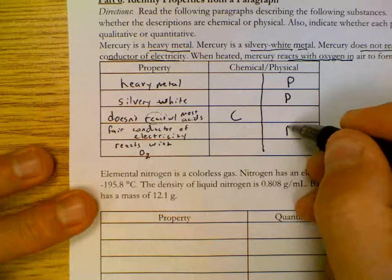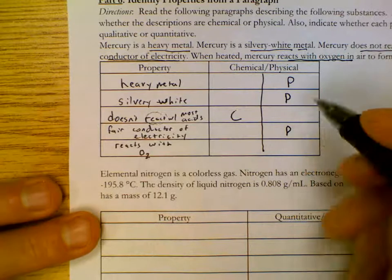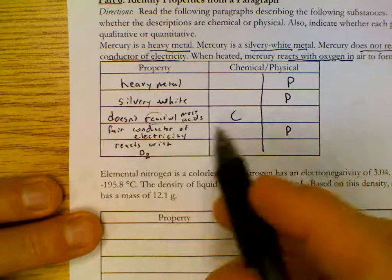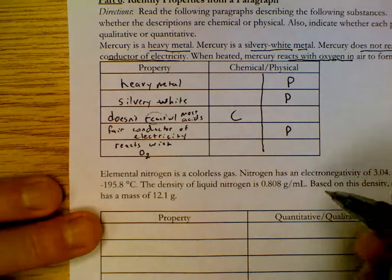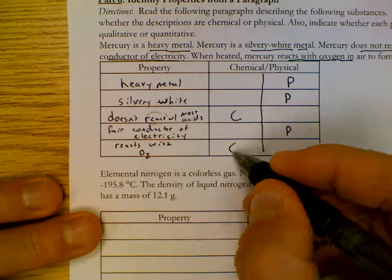Poor conductor of electricity. Now, conducting is a physical property. Students often think conducting might be chemical, but we don't make something new when we conduct electricity. Reacts with oxygen. That's chemical.